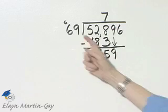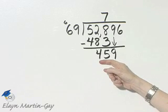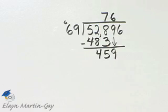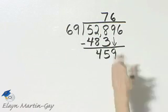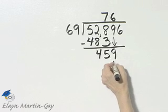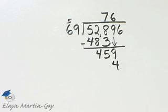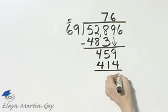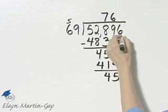Well, I know 7 times 69 is 483, and that would then be too much since I only have 459. So let's try 6 times. Now let's multiply: 6 times 69. 6 times 9 is 54, carry the 5. 6 times 6 is 36 plus 5 is 41. Let's subtract. That's 5 and 5 minus 1 is 4.